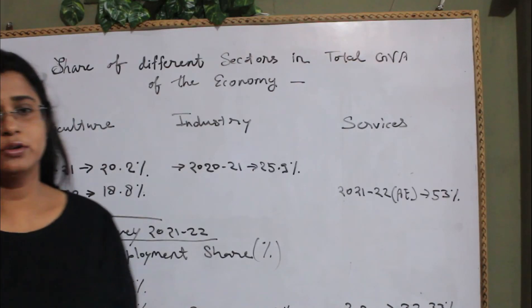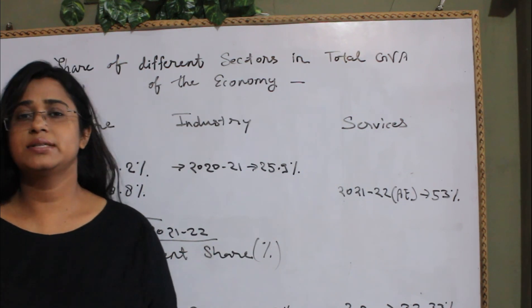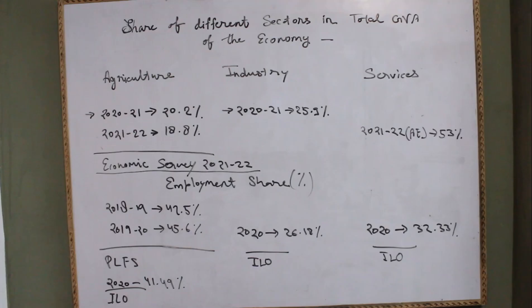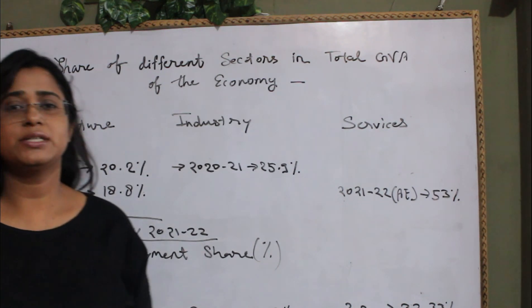So, first of all, we will go through some statistics. On the board, you can see all the three sectors: the agricultural sector, industrial sector, and the service sector, and here are their respective shares in the GVA economy. In 2020 and 2021, agricultural sector had 20.2% in GVA and it dropped in 2021-22 to 18.8%.